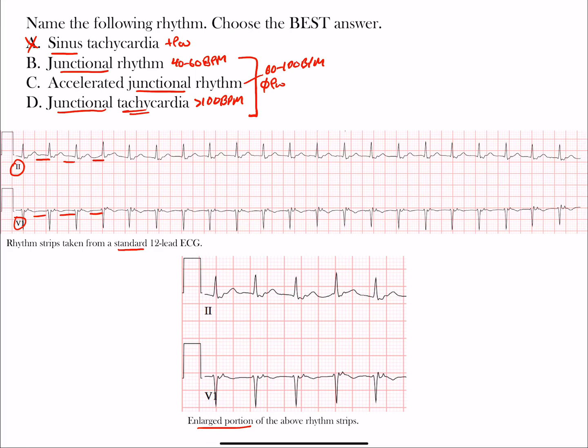If the rate was less than 40 beats per minute in a junctional rhythm, that's called junctional bradycardia. Notice it's less than 40 beats per minute, whereas sinus bradycardia is less than 60. This is based on the intrinsic rate for the AV junction.